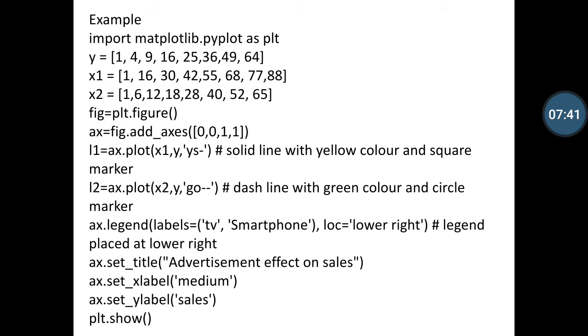Then after ax=fig.add_axes([0,0,1,1]). Then you define the line as l1=ax.plot(x1, y, 'ys-'). This indicates solid line with yellow color and square markers.